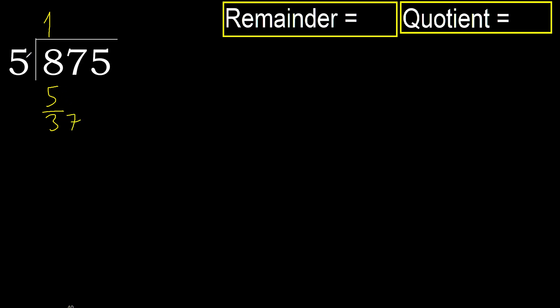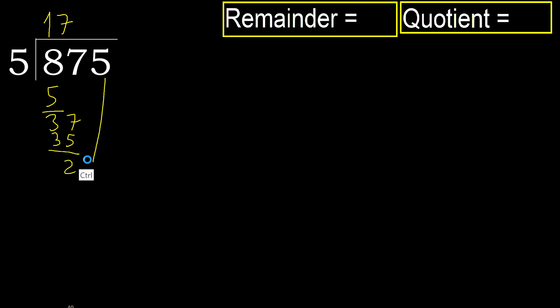5 multiplied by 8 is 40 — 40 is greater. Multiply by 7: 35 is not greater. Ok. Subtract. Next: 25.